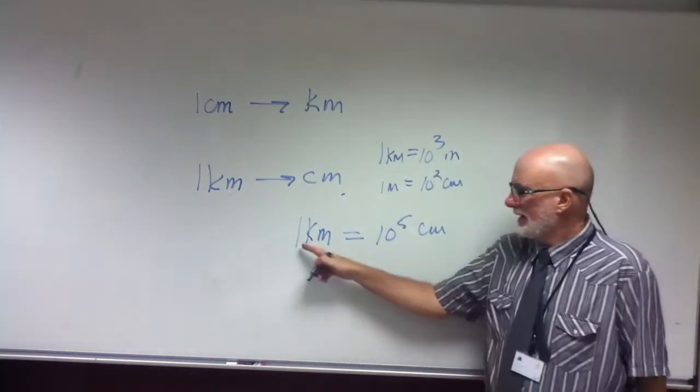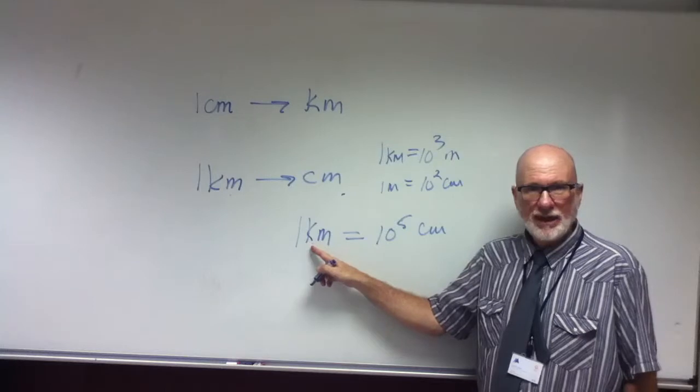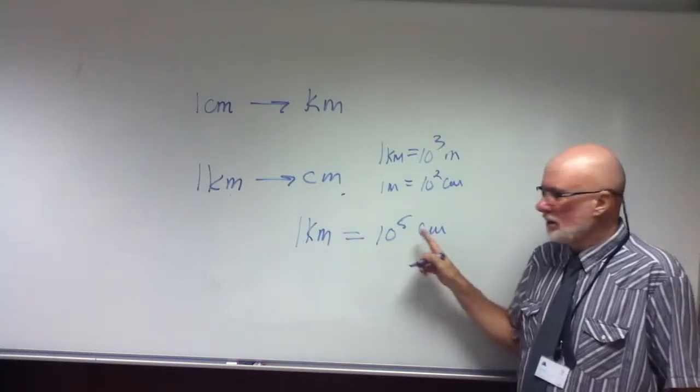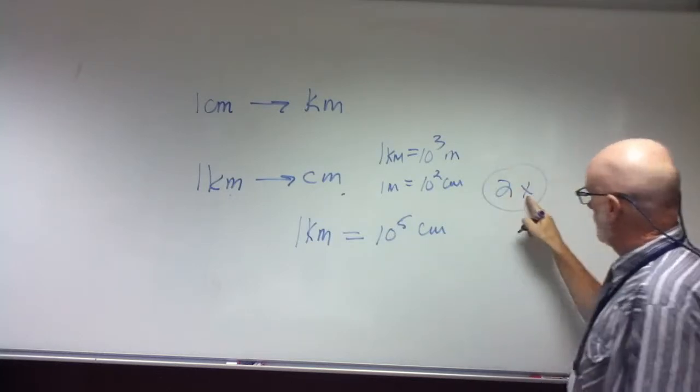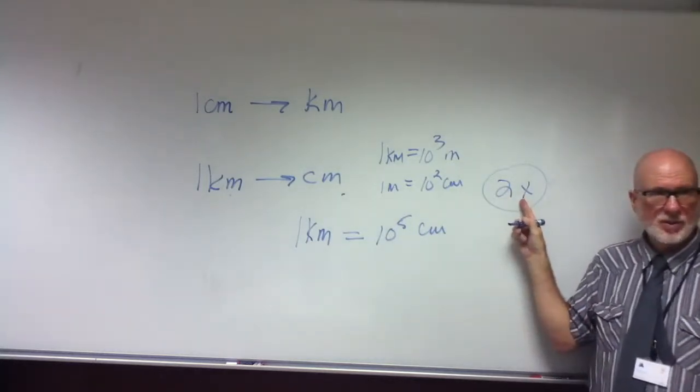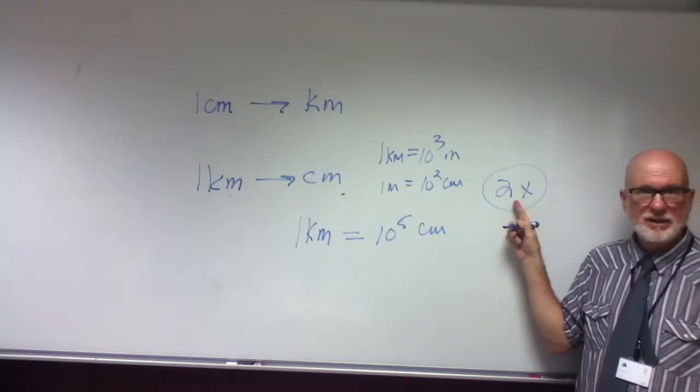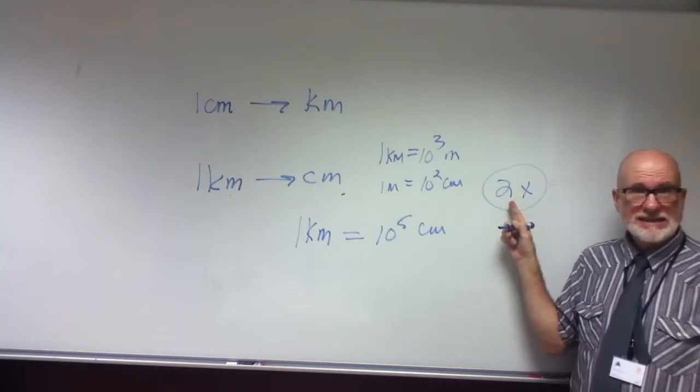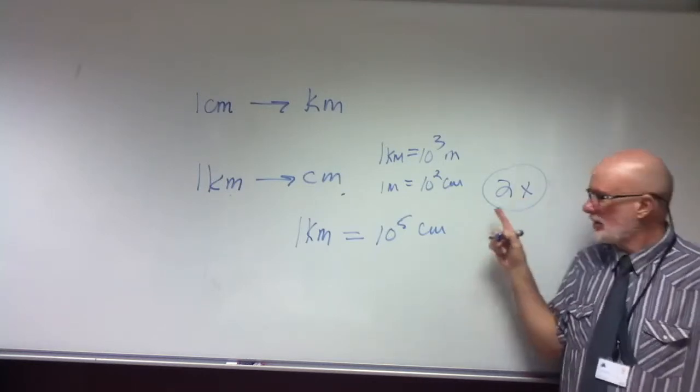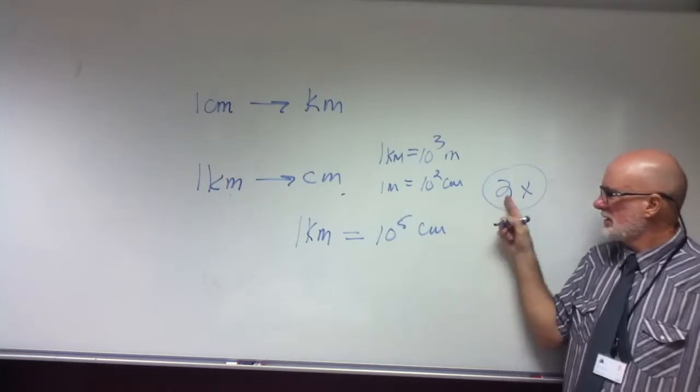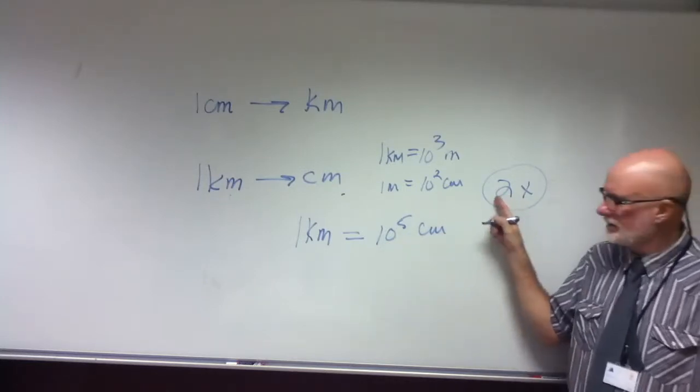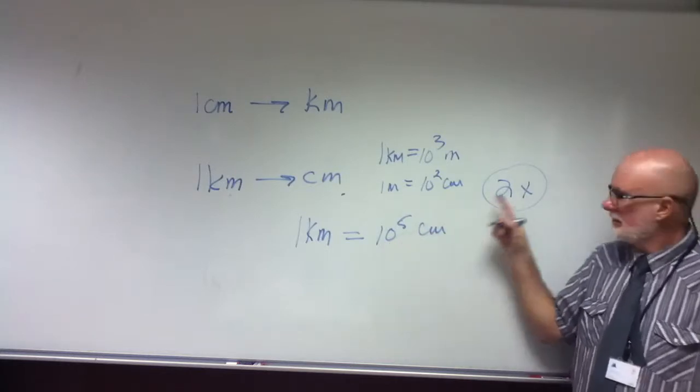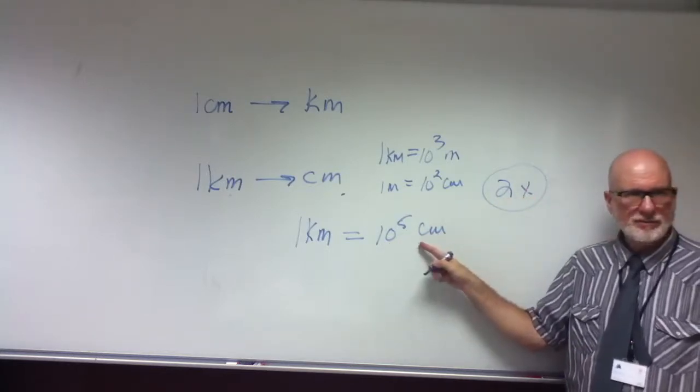As the unit label gets small, the number coefficient, right? That's the variable, or in this case, that's going to be similar, similar, similar. This is similar to this, and this is similar to this, right? Coefficient. Coefficient. Variable, what we call this unit label. Is that okay?